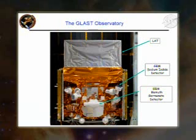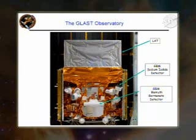As Kevin said, the LAT offers a very large field of view — 20 percent of the sky at any instant. And in sky survey mode, in just two orbits, or three hours, we're able to expose all parts of the sky for about 30 minutes.